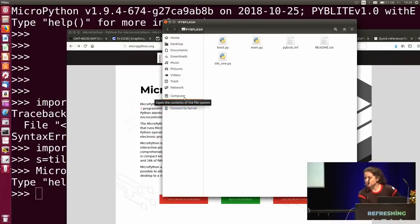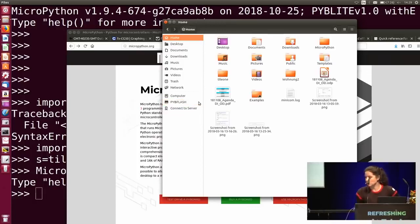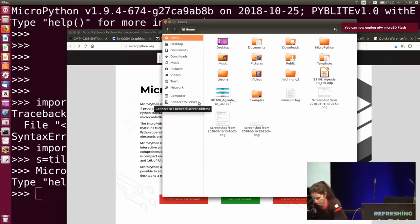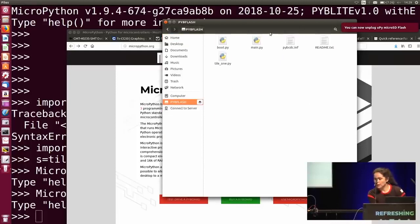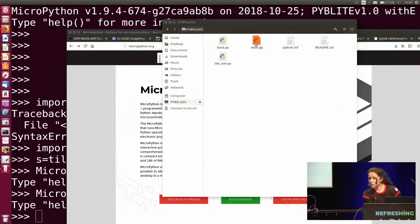It just comes out as a... It pops up like a USB stick or something. So when I go in there, I have my main.py, which is empty now, I believe. So you can put your code here. Just type code and save it to your board and run it.